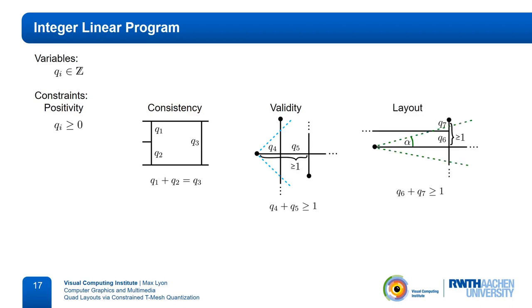Validity and layout constraints both specify sets of arcs of which at least one needs to be quantized to at least one. This is easily transformed into a linear constraint that states that the sum of the quantizations of these arcs needs to be greater than or equal to one.